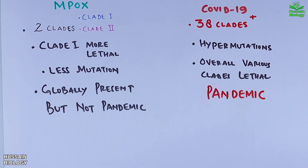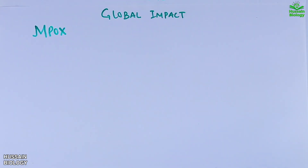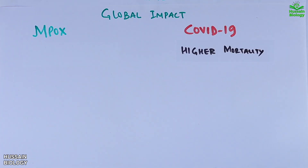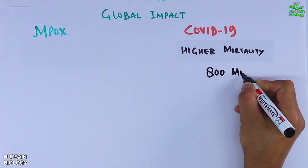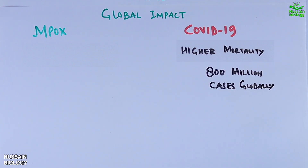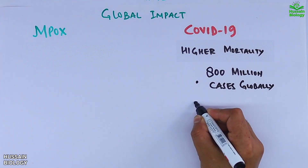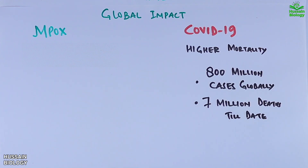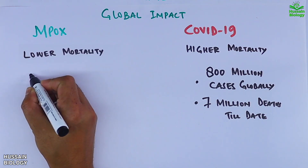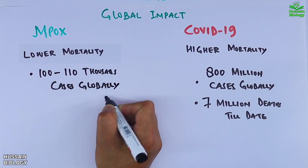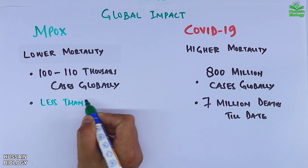COVID-19 wreaked havoc globally with higher mortality rates — over 800 million confirmed cases globally and 7 million plus deaths reported as of mid-2024. On the other hand, mpox has less mortality than COVID-19, with about 100,000 cases globally and fewer than 1,000 deaths.